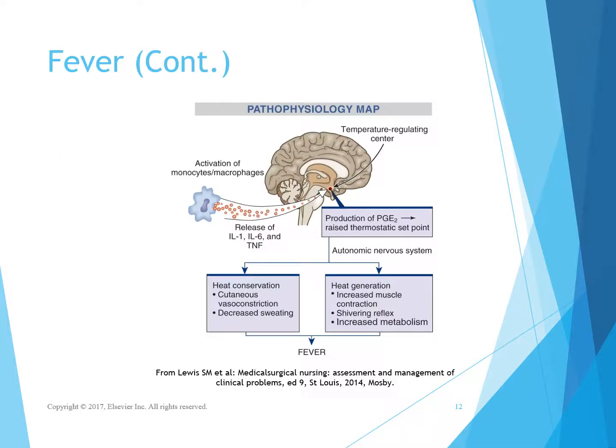This pictorial shows the release of prostaglandin E2 and how we get the generation of increased muscle contractions and shivering reflexes to produce a fever, as well as our heat conservation method. A picture says a lot.